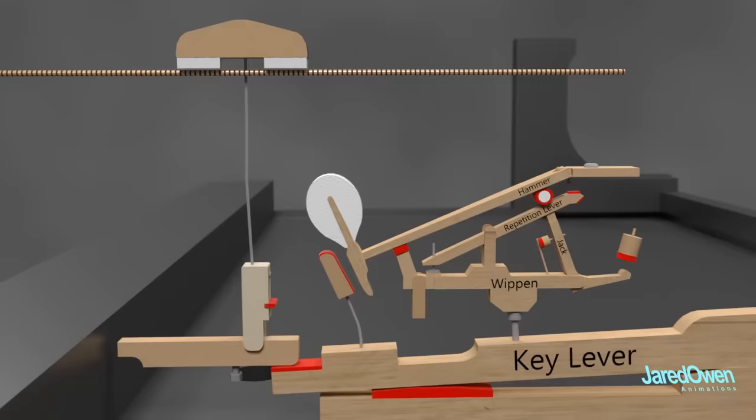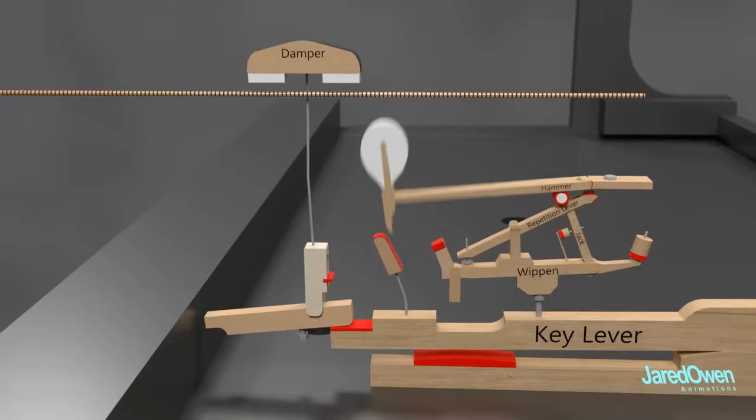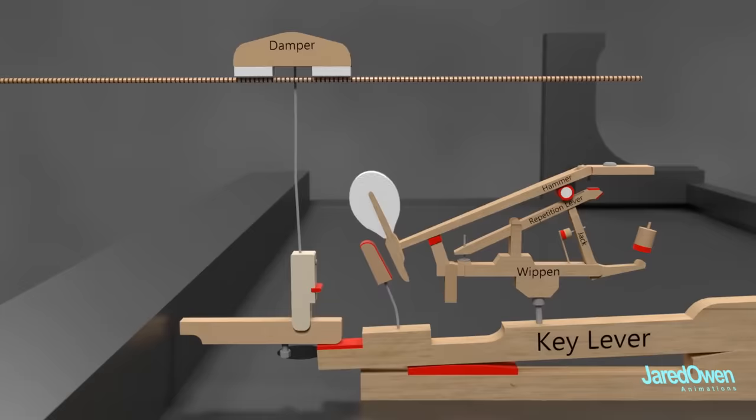This piece is called the damper. You can see that it actually rests on the strings. Pressing the key causes the damper to rise, which allows the string to vibrate. But as soon as you release the key, the damper comes back down and stops the sound.